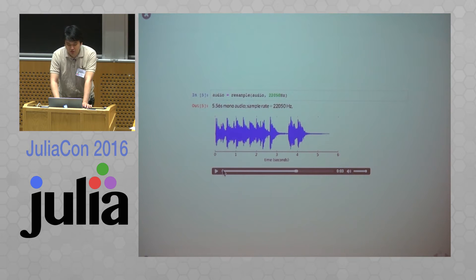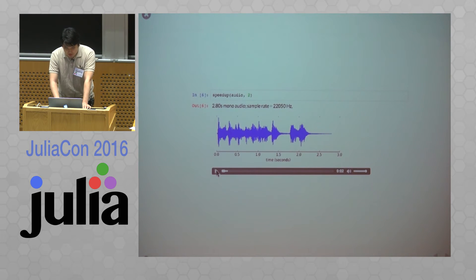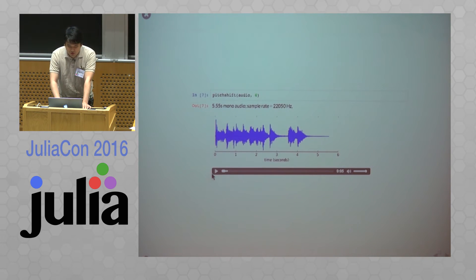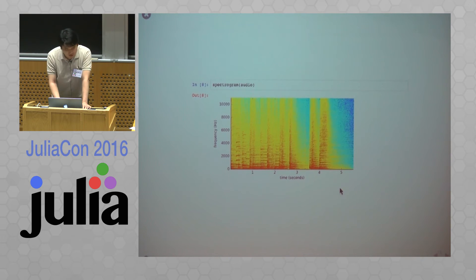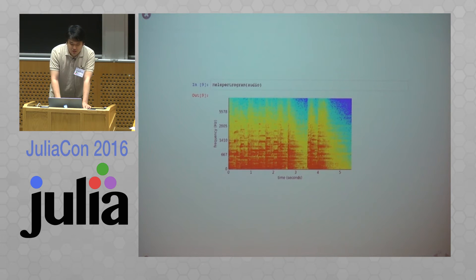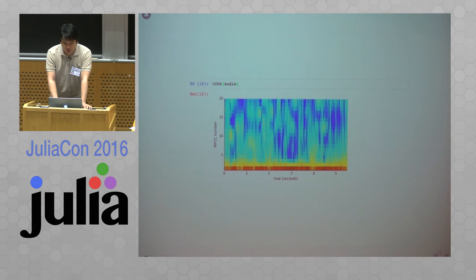There is not much audible difference when resampling because human perception of audio is not very sensitive above 10,000 Hz. You can speed up the audio using a phase vocoder, and using the same technique you can pitch shift the audio. This is the spectrogram of the audio — one of the time-frequency representations. This is another time-frequency representation called the mel spectrogram, which is a distorted spectrogram thought to better represent human perception of audio.